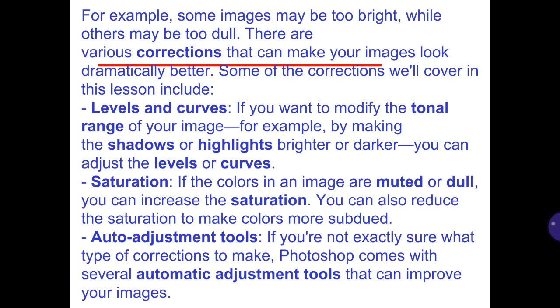Some of the corrections we'll cover in this lesson include Levels and Curves. If you want to modify the tonal range of your image, for example by making the shadows or highlights brighter or darker, you can adjust the levels or curves. Saturation: if the colors in an image are muted or dull, you can increase the saturation, or reduce it to make colors more subdued. Auto-adjustment tools: if you're not exactly sure what type of correction to make, Photoshop comes with several automatic adjustment tools that can improve your images.